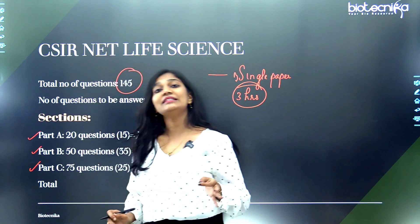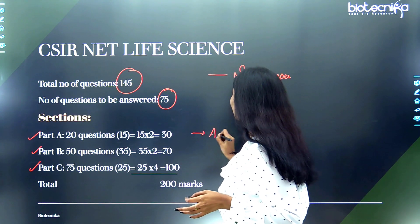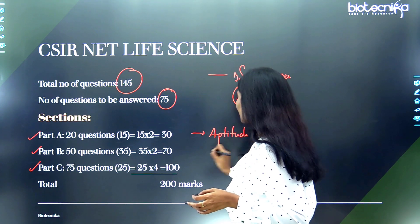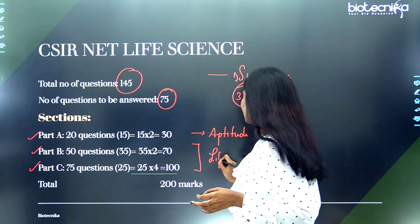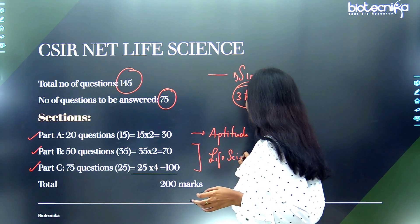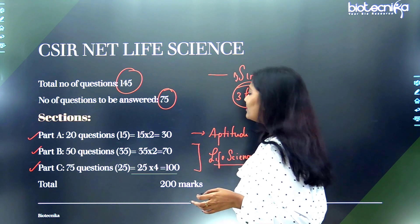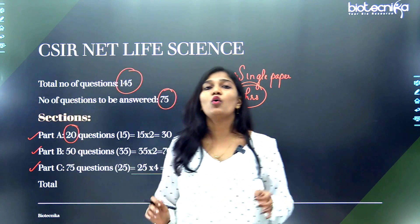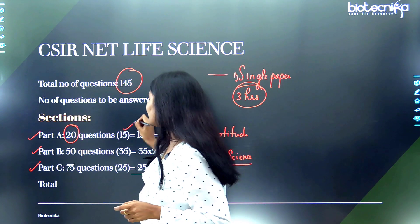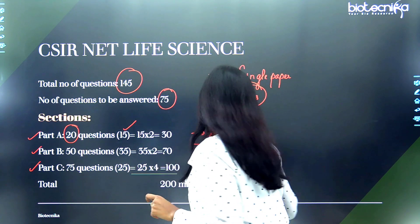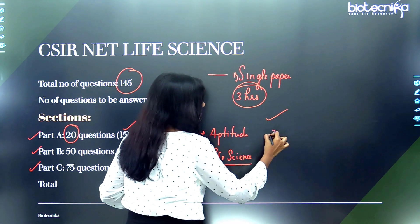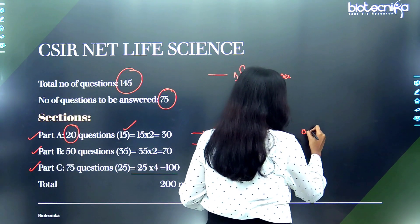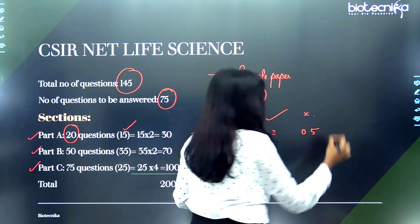Part A mainly deals with aptitude, whereas Part B and Part C deal with our subject, which is biology or life sciences. Part A comprises 20 questions, out of which you attempt only 15. For every correct answer you get two marks, and for any mistake there is a negative marking of 0.5.